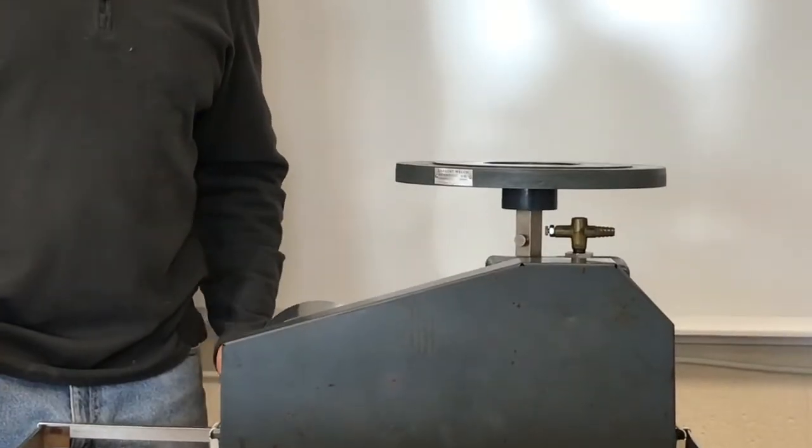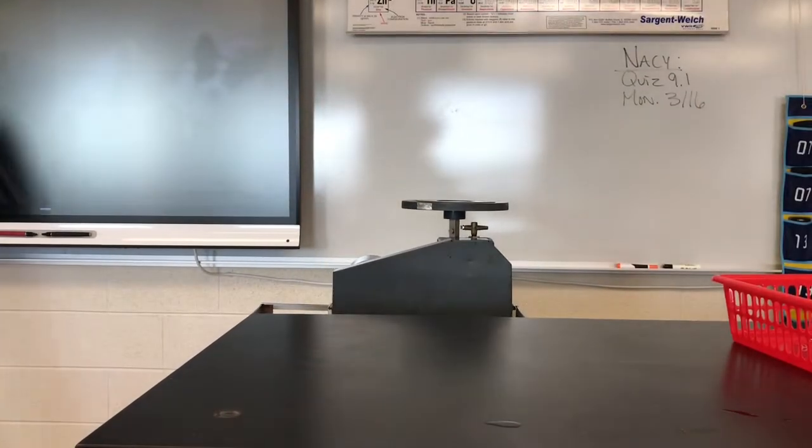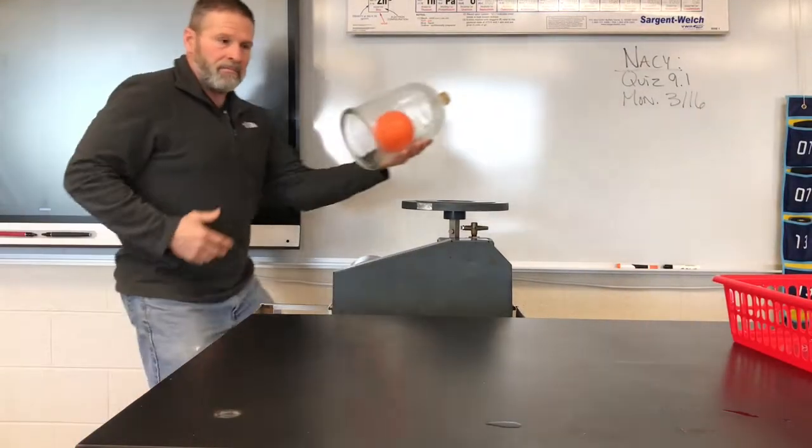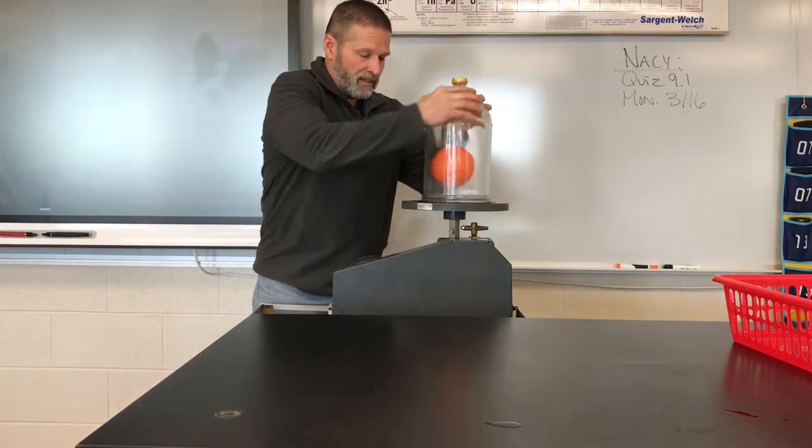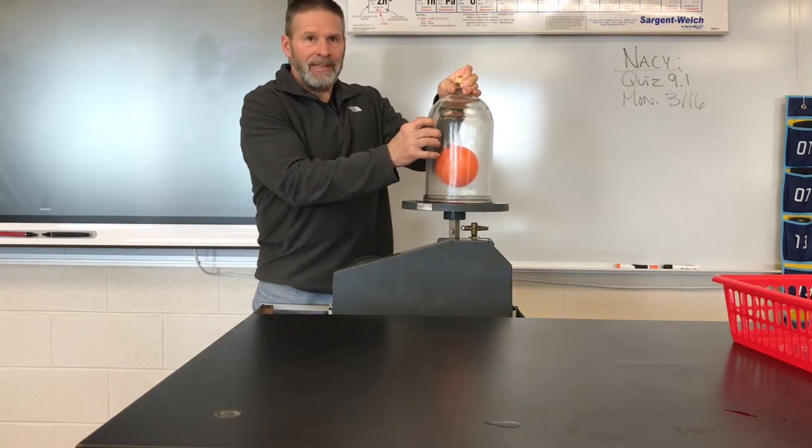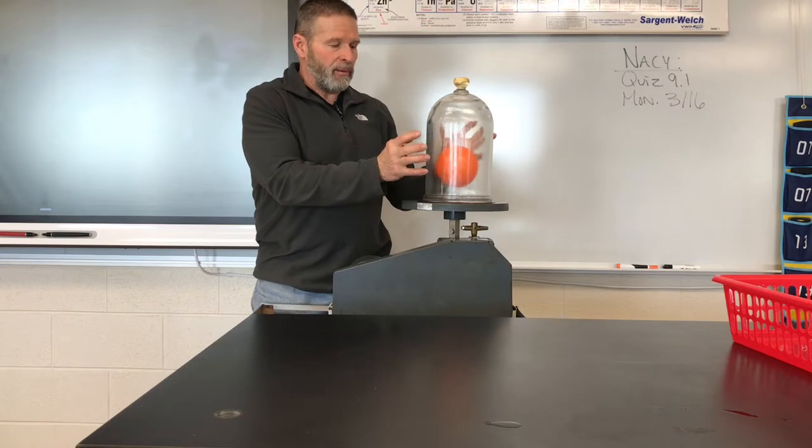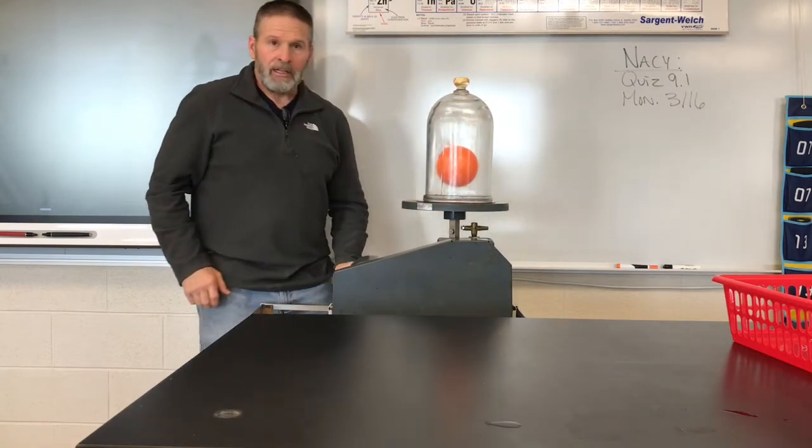So this is a Bell Jar, a heavy glass jar that we're going to set over top of this and it seals on. So now when we turn the pump on, we're going to be sucking air from the inside of the Bell Jar and the pressure inside here is going to be less than the pressure out here. So here we go.